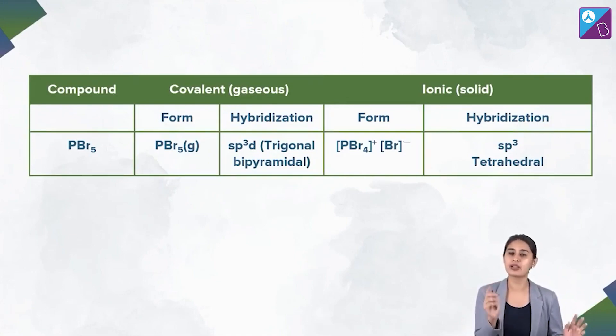Third one, PBr5. PBr5 exists as PBr5 similar to PCl5, TBP in covalent state. In ionic it exists as PBr4+ and Br-. You can see a positively charged species and a negatively charged species. And you know the answer, right? So PBr4+, how can you write it? 5 + 4 - 1/2 of course comes out to be 4, sp3, that means tetrahedral geometry.